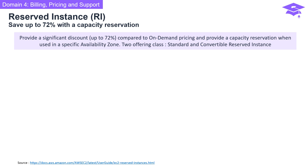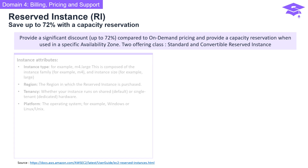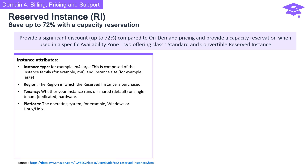Amazon EC2 reserved instances provide a significant discount — up to 72% — compared to on-demand pricing, and provide a capacity reservation when used in a specific availability zone. A reserved instance has four attributes that determine its price. Instance type includes the instance family, like M4, and instance size, like large.